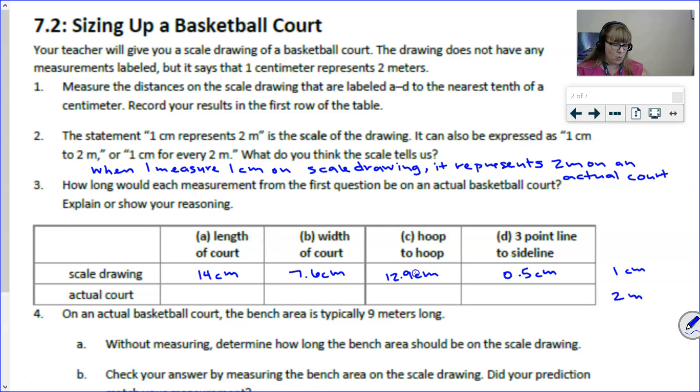Hopefully what you wrote down is that when I measure one centimeter on the diagram, on that scale drawing, it represents two meters in real life on an actual basketball court. So the next question says, how long would each measurement from the first question, which we've listed here in our table, how would that measure on an actual basketball court? Here's the strategy that I want you to observe. I know that we are changing the units. Centimeters is adjusting to meters, but we don't need to focus on that change right now.